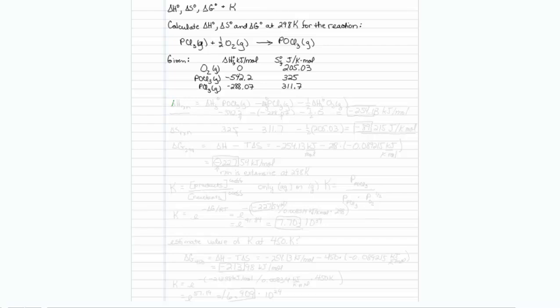To get delta H of reaction, we should take the heat of formation of the products, that would be POCl3, minus the heat of formation of the reactants, that would be PCl3 minus one half, we're going to use the coefficients as well, O2. By simply putting that in our calculator, we ought to be able to figure that out.